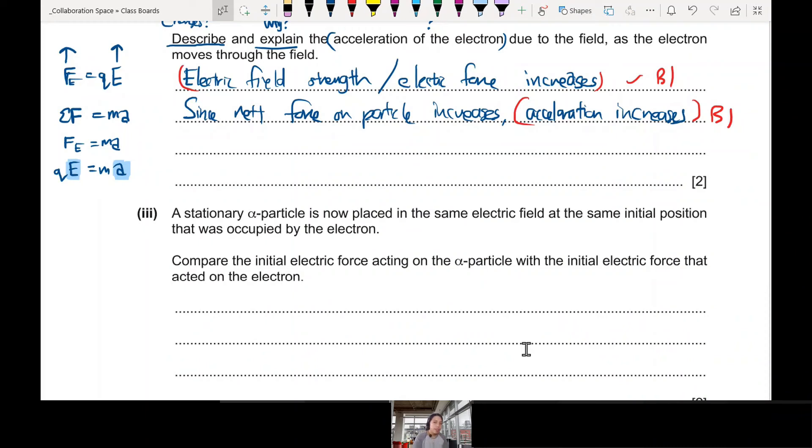A stationary alpha particle is now placed in the same electric field. Means the pattern of E is the same. At the same initial position that was occupied by the electron. Compare. So we say which one larger, which one smaller, by how much, if you know that. Compare the force acting on alpha particle with the initial force acting on electron. What is alpha particle? In case you forget already, alpha particle is what we also call a helium nucleus without the electrons. So we have two plus, two protons, two neutrons. This is what we call the alpha particle. And it has a charge of two protons. So the charge of this fellow is positive 2e.